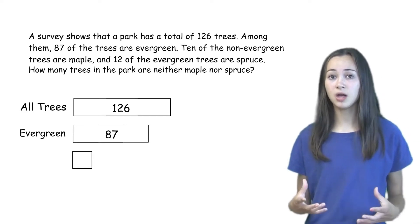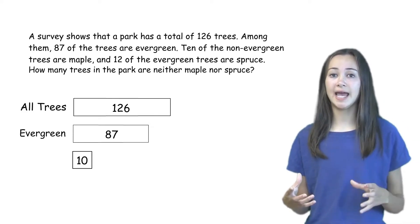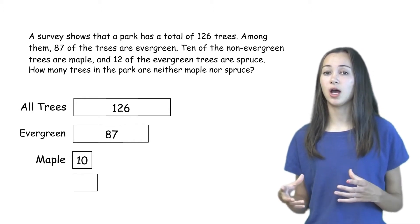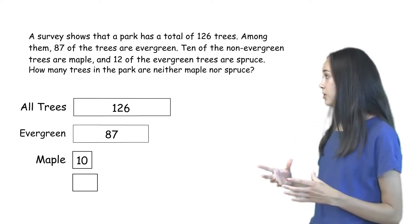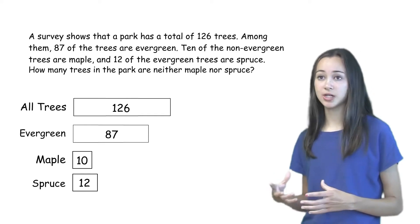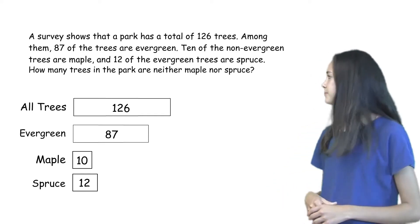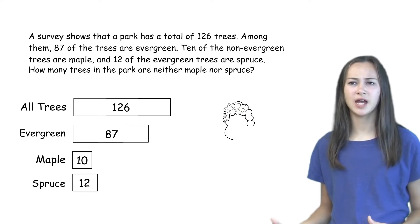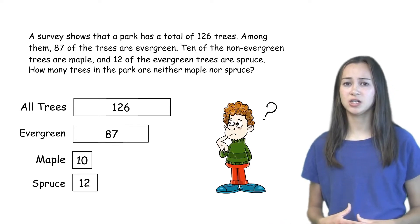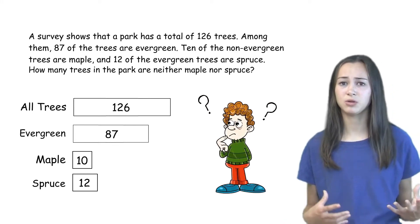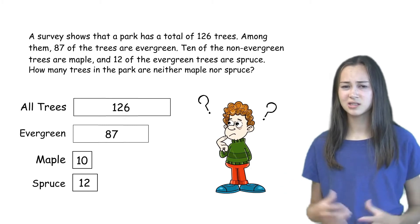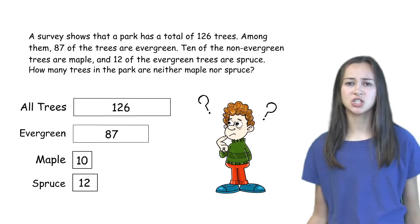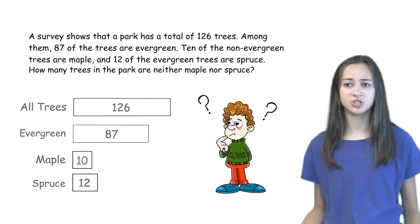Now we can draw another box to represent the 10 maple trees, and another box to represent the 12 spruce trees. But can this picture help us find the number of trees that are neither maple nor spruce? Not really, because this doesn't show the relationships between the different trees.